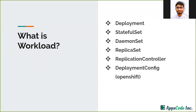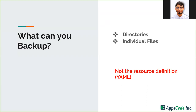What is a workload? In Kubernetes, your pod and pod controllers — for example, deployment, statefulset — these are workloads. Stash can take backup of deployment, statefulset, daemonset, replicaset, and replication controller. It can also take backup of the deployment config of OpenShift. In this workload backup model, you can take backup of directories and individual files. Keep in mind that in workload backup, we cannot backup the resource definition — the YAML definition of a deployment or statefulset. This is handled by another model we call cluster resource backup, which we will discuss in a separate video.